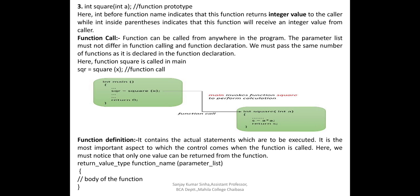The second element is function call. A function can be called from anywhere in the program. The parameter list must not differ in function calling and function declaration. The parameters and arguments we put during declaration must match those in the call, otherwise you will get an error. We must pass the same number of arguments as declared in the function declaration.